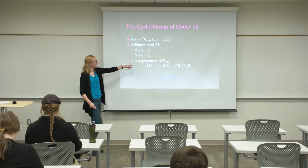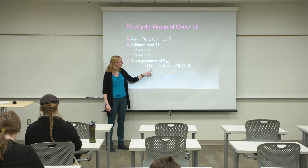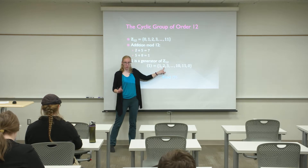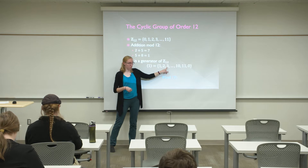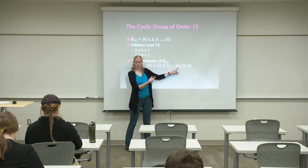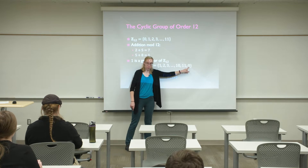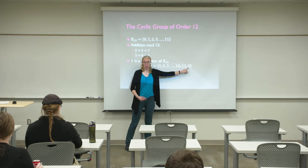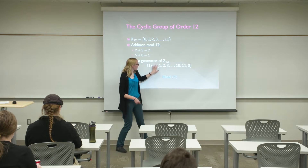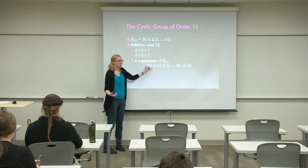One is a generator of Z12. The cyclic group generated by 1 is: 1, 2×1, 3×1, 4×1, and so on. When we get to 11×1 and then 12×1, that equals 12, which is the same as 0. So we got all of the numbers in Z12, which means 1 is a generator.